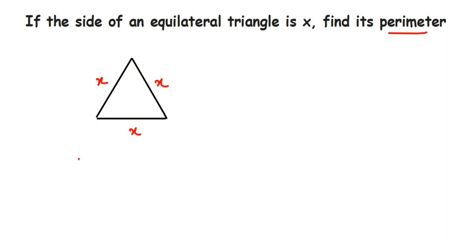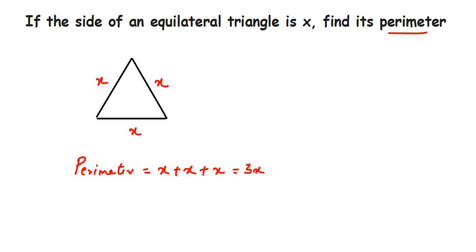Perimeter will be equal to x + x + x. When you add those, you get 3x. So the perimeter of an equilateral triangle with side x is 3x.